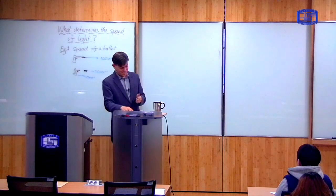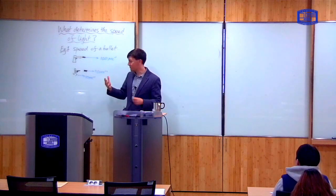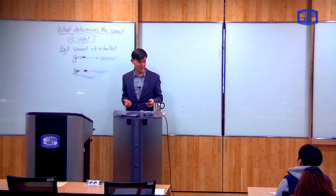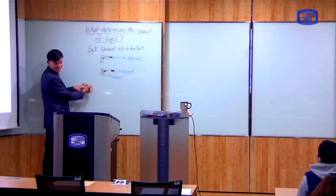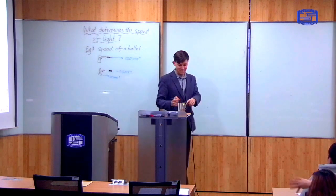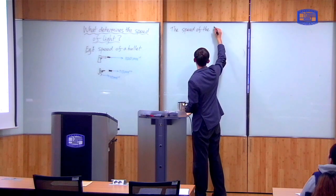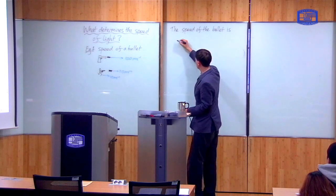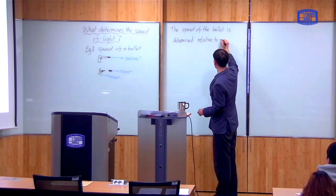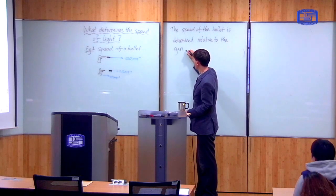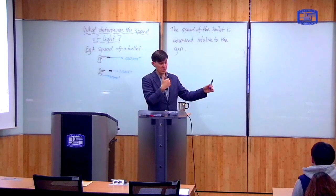So what this shows is that the speed of the bullet is determined relative to the gun. If the gun is stationary, the bullet has a speed of 100 meters per second. If the gun is moving with 10 meters per second, then the bullet has a speed of 110 meters per second.